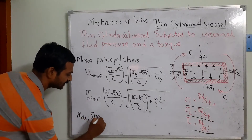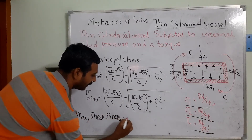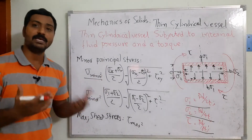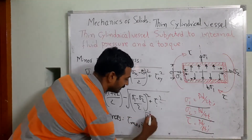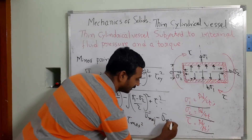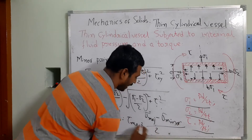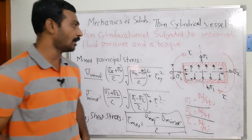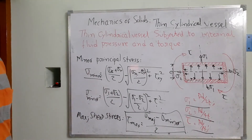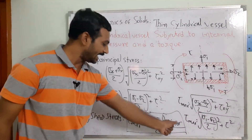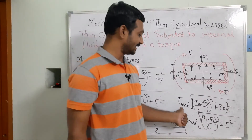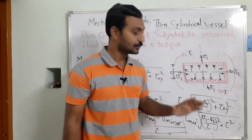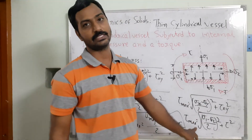The maximum shear stress τ_max is calculated as: τ_max = (σ_major − σ_minor)/2. Alternatively, τ_max can be derived directly as: τ_max = √[(σx − σy)²/4 + τxy²]. Substituting σx and σy into this equation gives the maximum shear stress acting on the system.